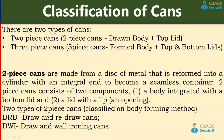Classification of cans: there are two types — two-piece cans and three-piece cans. Two-piece cans are made from a disk of metal that is reformed into a cylinder with an integral end to become a seamless container. A two-piece can consists of two components: a body integrated with a bottom lid, and a lid with an opening. The two types are classified based on the body forming method.